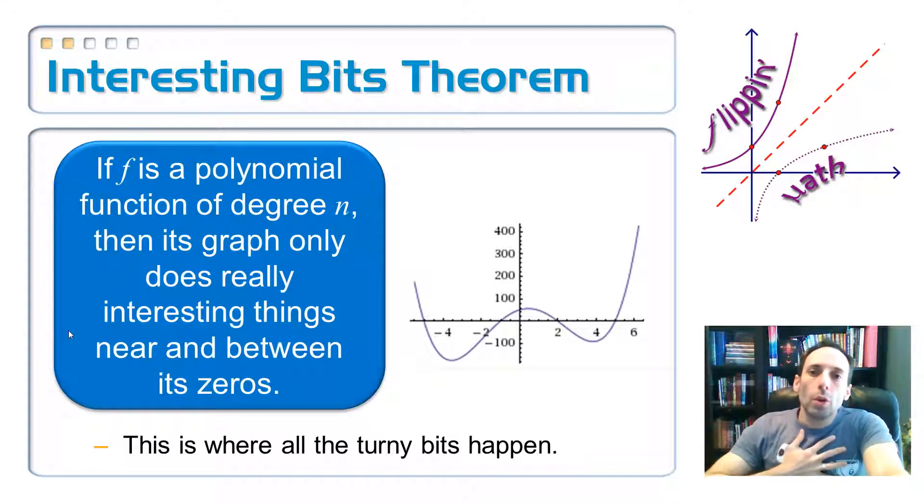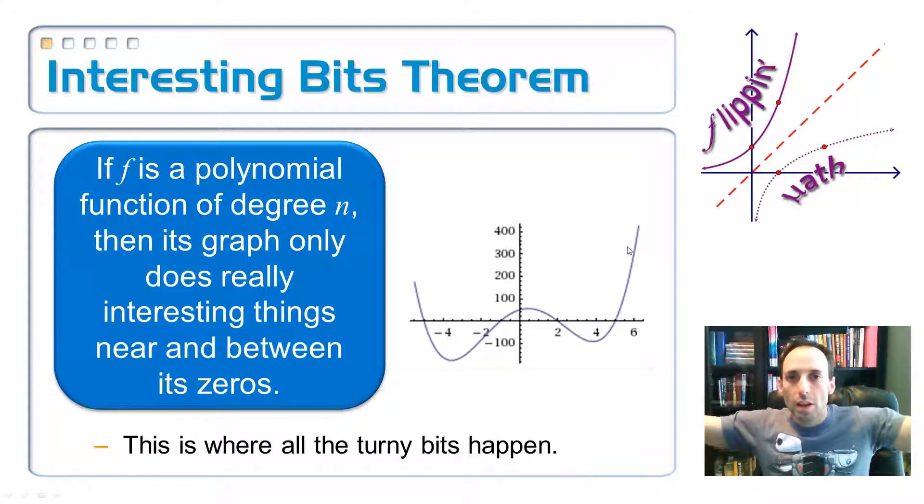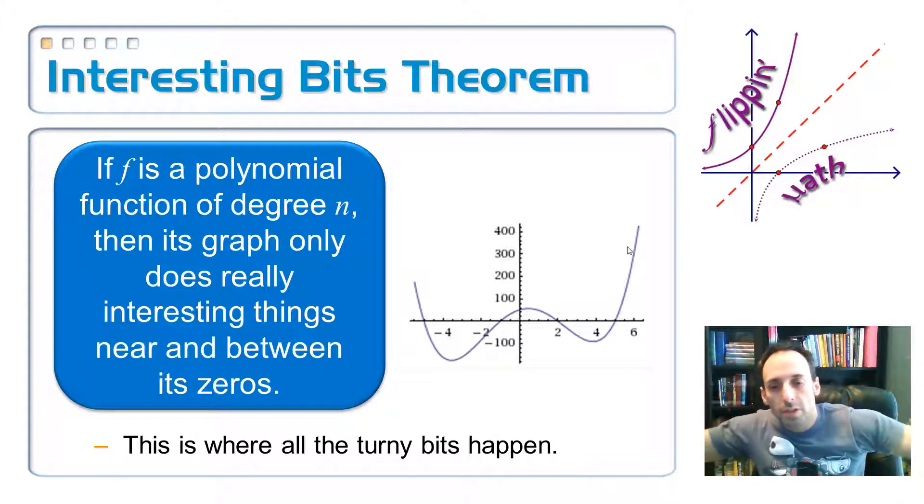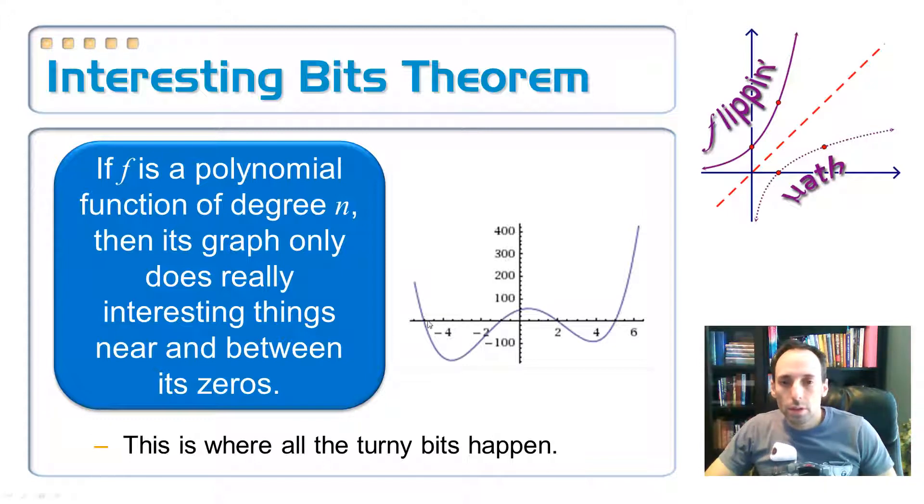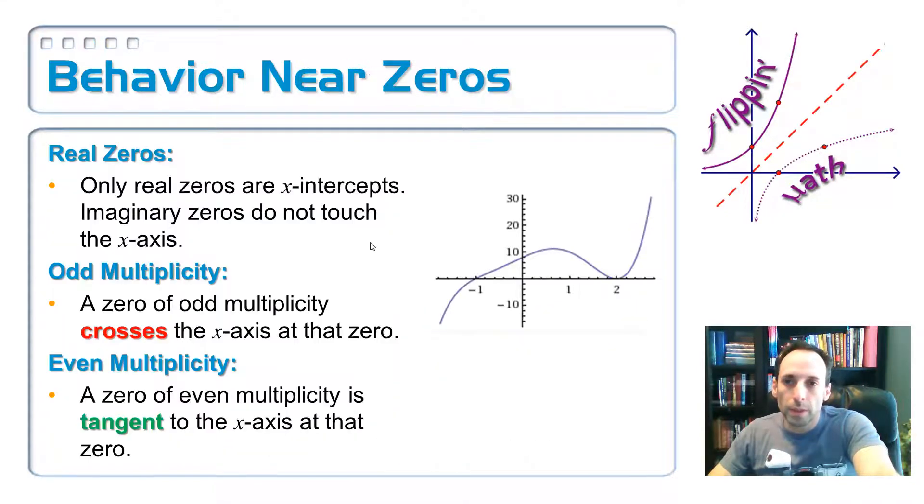All right. So here's my own theorem, which I have titled the interesting bits theorem. Let F be a polynomial function of degree n. Then its graph is going to only do really interesting things near and between its zeros. So I'm saying that the interesting parts are only happening around its zeros. And the reason why is because the other part is just the end behavior. They might both be pointing up or down if it's a referee or disco dancer in opposite directions. So all the turny bits are going to happen in between and around the zeros. And that's my theorem there. Actually, technically it's a conjecture because nobody's gone around to prove it and whatever.